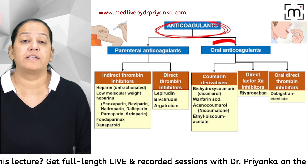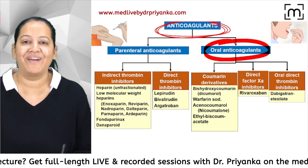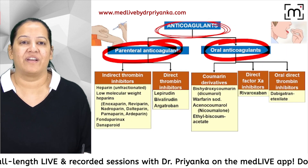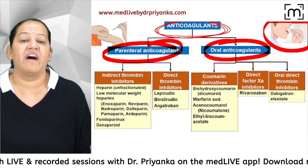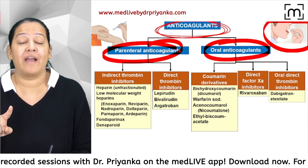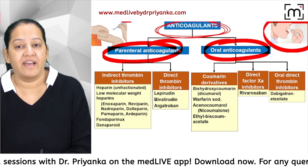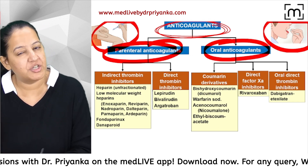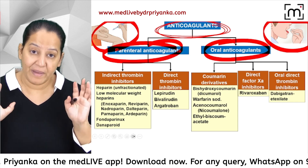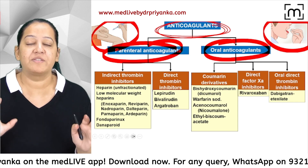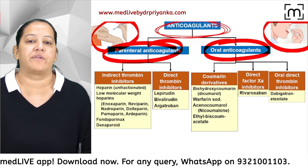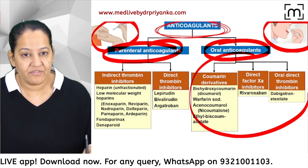There are two types of anticoagulants: oral anticoagulants and parenteral anticoagulants. The route is different — oral anticoagulant is given orally, while parenteral anticoagulant is given via subcutaneous injection or, in an emergency, IV injection, but not intramuscular injection.